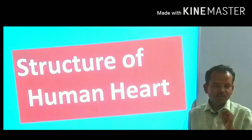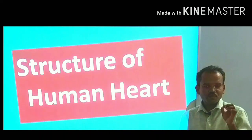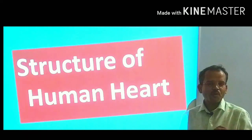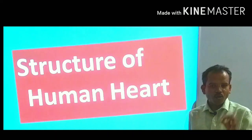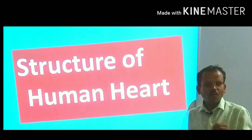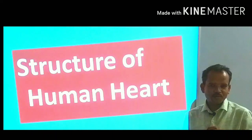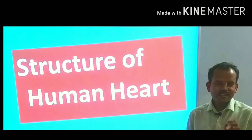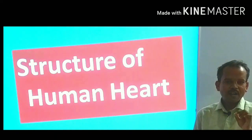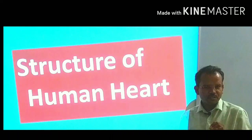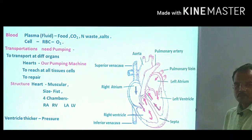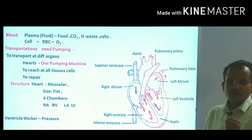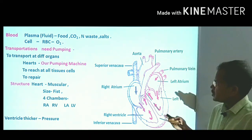Just as an electric motor is required to transport water, if you want to transport oxygen, carbon dioxide, hormones, and nutrients in the body, you need a transportation system and a transporting machine — that is the human heart. Transportation in the body is done using blood.